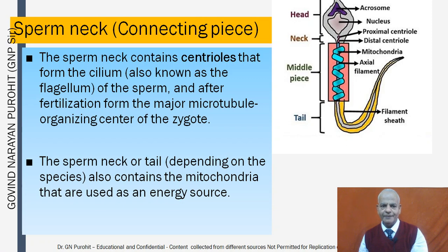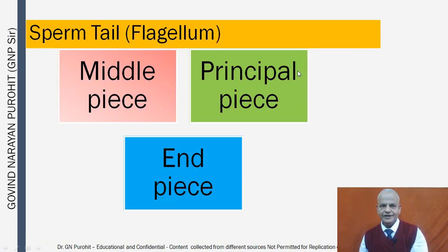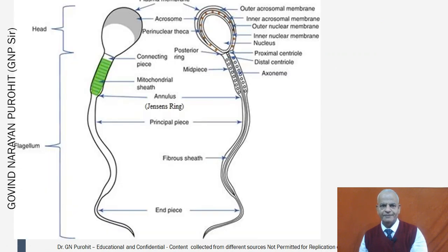The sperm neck or tail, depending on species, also contains mitochondria used as an energy source. In the picture you can see the acrosome, nucleus, neck, proximal centriole, distal centriole, the middle piece containing the axial filament, filament sheet, and the tail. The sperm tail or flagellum has a middle piece, principal piece, and end piece.